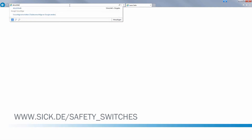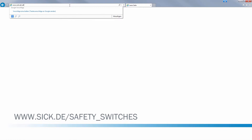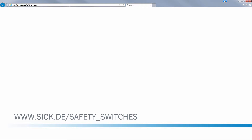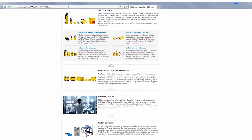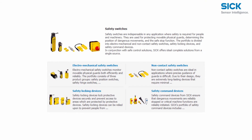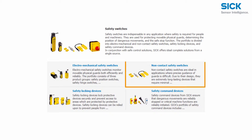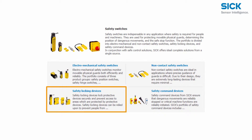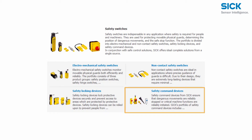In these tutorials we will talk about safety switches — which safety switches does SICK have? The SICK safety switches portfolio is divided into four main groups: electromechanical safety switches, non-contact safety switches, safety locking devices, as well as safety command devices.